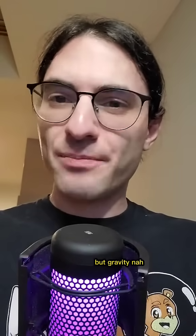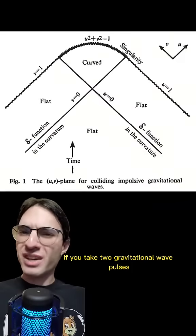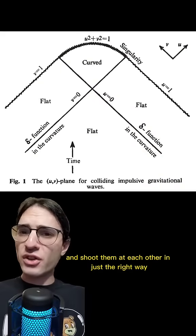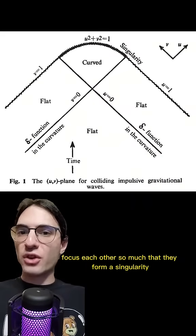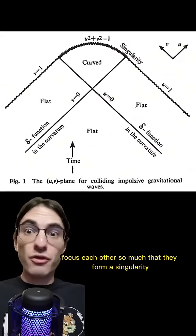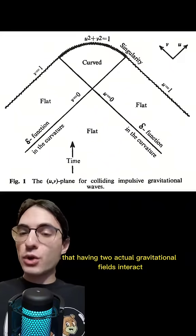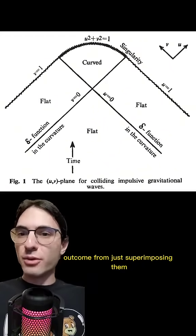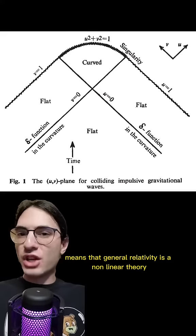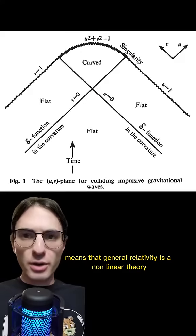But gravity? Nah. If you take two gravitational wave pulses and shoot them at each other in just the right way, the gravity of the waves focuses each other so much that they form a singularity. That having two actual gravitational fields interact leads to a different outcome from just superimposing them means that general relativity is a non-linear theory.